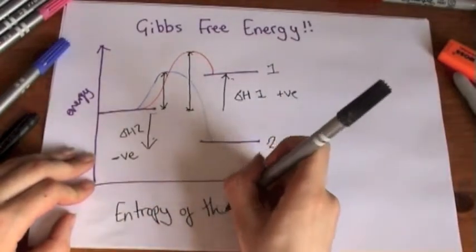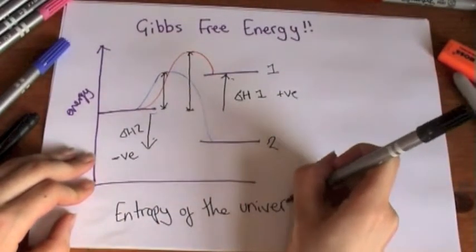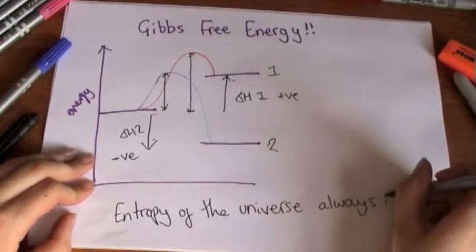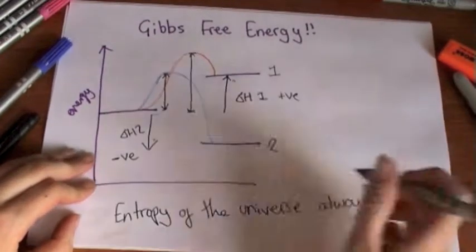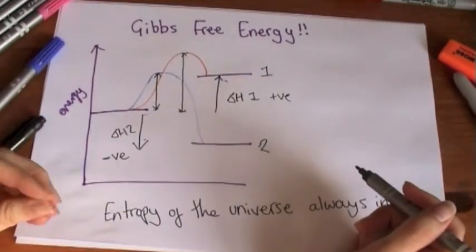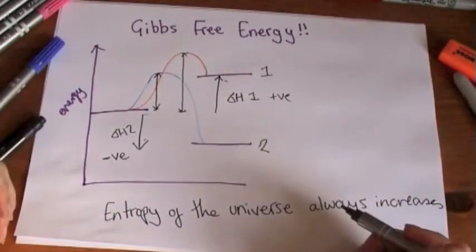If we look at the second law of thermodynamics, so the first one is energy is always conserved, can't be created or destroyed. And the second law, when something is spontaneous. So for something to happen spontaneously, to happen, to be able to happen, the entropy of the universe must increase.